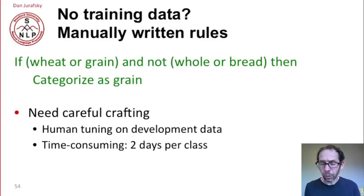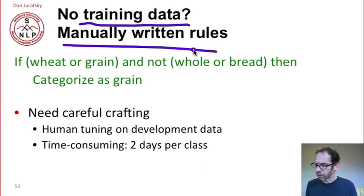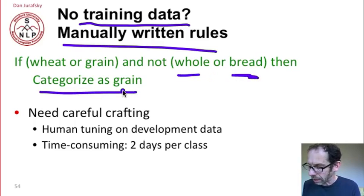What classifier you build depends a lot on what kind of data you have. Let's suppose you have no training data. In that case, the right thing to do is use manually written rules. Here's a rule for deciding if a document is about grain: if the word wheat or grain is there and doesn't have the word whole or bread, so it's not a recipe, then we categorize it as a grain document.